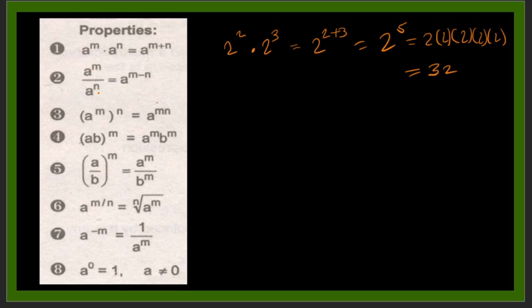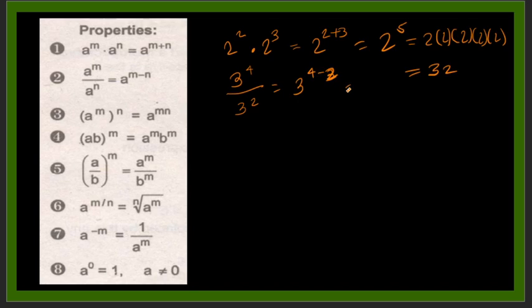Property 2: a raised to the power of m over a raised to the power of n equals a raised to the power of m minus n. You subtract the exponent of the denominator from the exponent of the numerator. For example, 3 to the 4th over 3 squared equals 3 to the power of 4 minus 2, which is 3 squared — wait, 3 to the power of 2, which simplifies to 9.